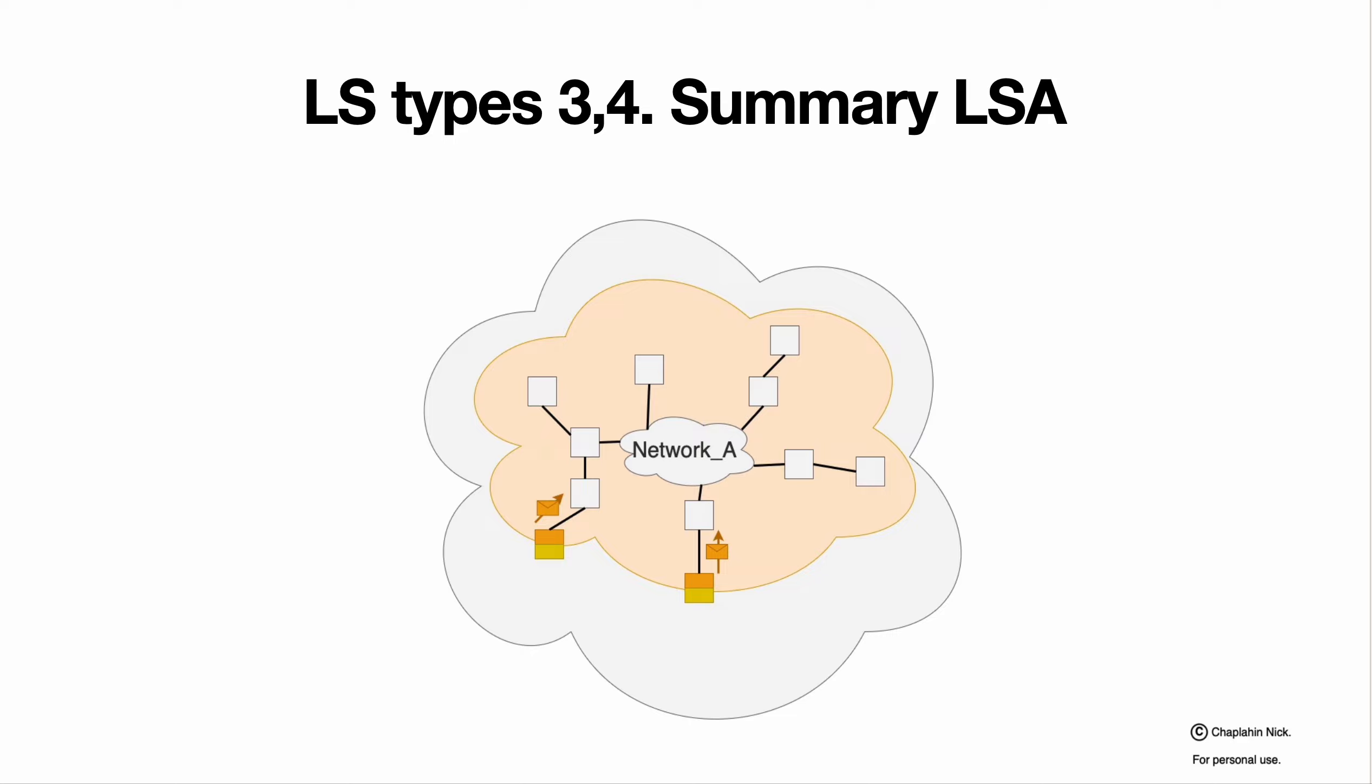Next type are summary LSAs of types 3 and 4. Summary LSAs are used to inform devices within area about external routes. Border, area border routers generating summary LSAs per route, per destination, because destination is one of the most important thing in the routing at all, final destination, not the movie.